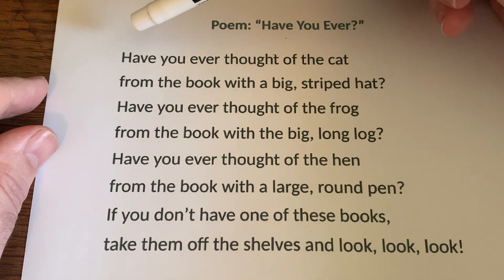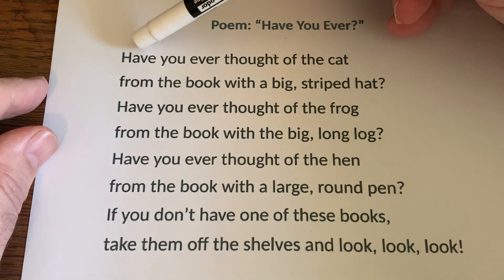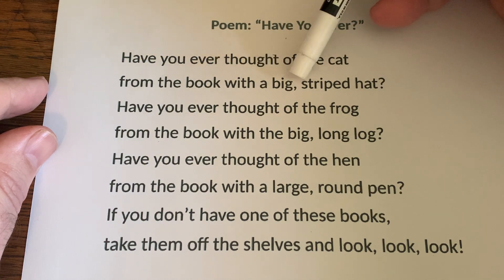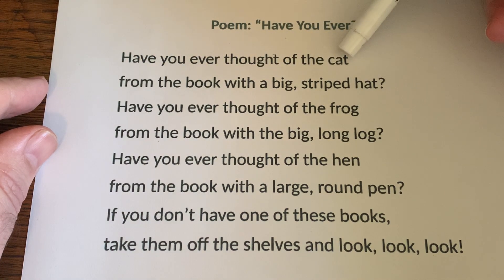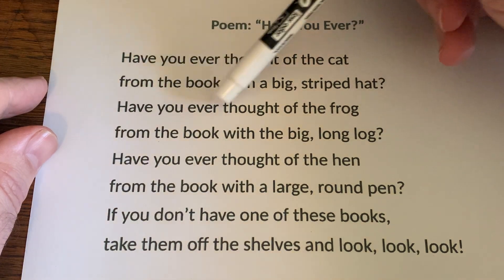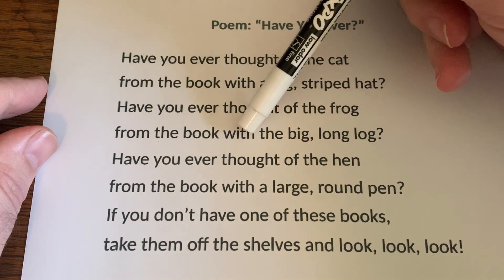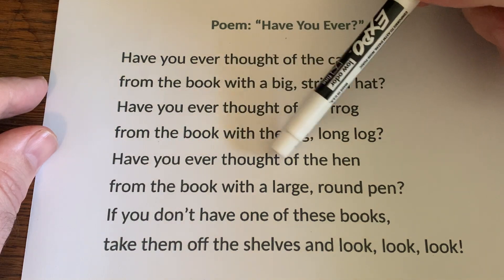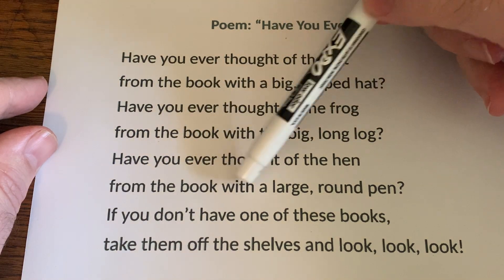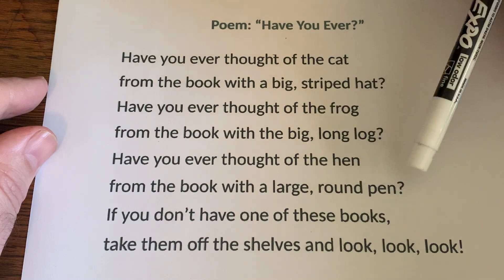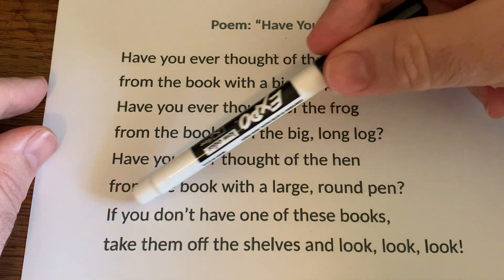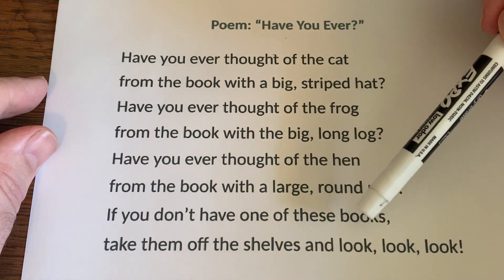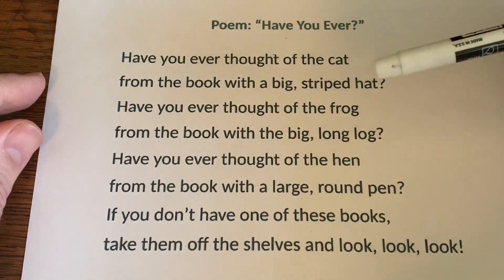Let's just concentrate on the words. I'm going to read through one more time, see if you can read along with me. Have you ever thought of the cat from the book with a big striped hat? I noticed that cat and hat rhyme. Have you ever thought of the frog from the book with the big long log? Frog, log — those rhyme. Have you ever thought of the hen from the book with a large round pen? Hen, pen. If you don't have one of these books, then take them off the shelves and look, look, look. Books and look — those rhyme too.